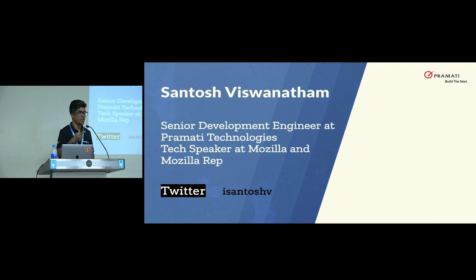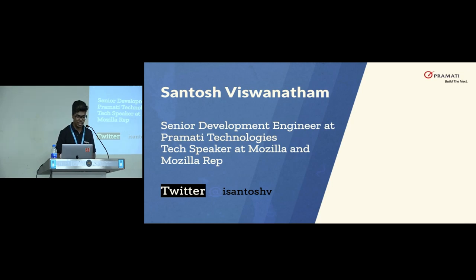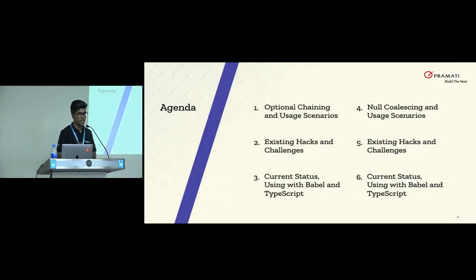These two topics — how many of you have read the abstract on the website for this talk? When we talk about JavaScript, we directly think about frameworks, but at my previous job I was taught to do things using vanilla JS rather than a framework. That's where I've been involved in completely checking what is new with JavaScript and what is going to be released next. My agenda is optional chaining and null coalescing, covering usage scenarios, current hacks, the status of these two proposals, and how to start using them before they're released as ES9 or ES10.